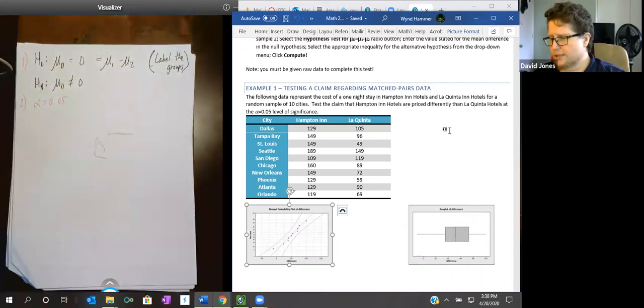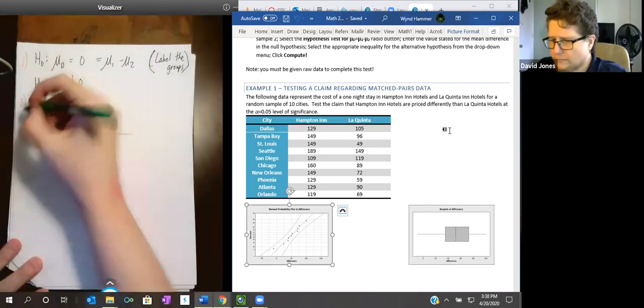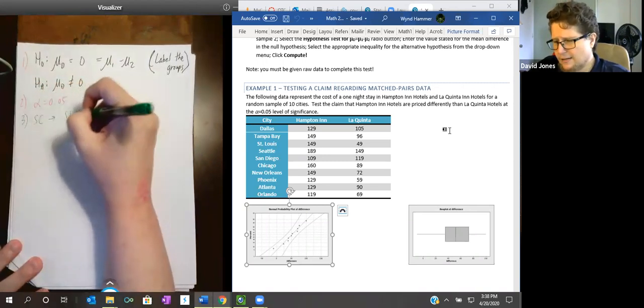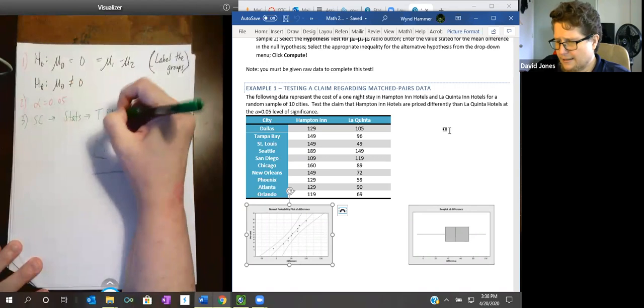We can look and see the box plot. Or here's the probability plot. This is the QQ plot. All the dots are close to that line, which means it meets that criteria of the QQ plot. And notice the box plot doesn't have any whisker or outliers on it. So it meets the criteria of the test. And this was Hampton. And this is La Quinta. Alpha equals 0.05. This was step one. Step two is alpha equals 0.05. We're going to go in and do our StatCrunch test now.